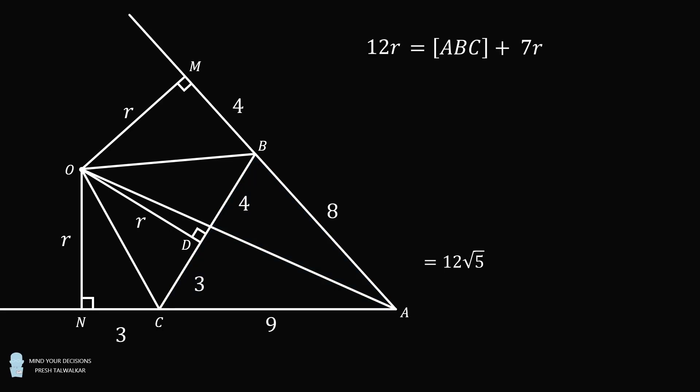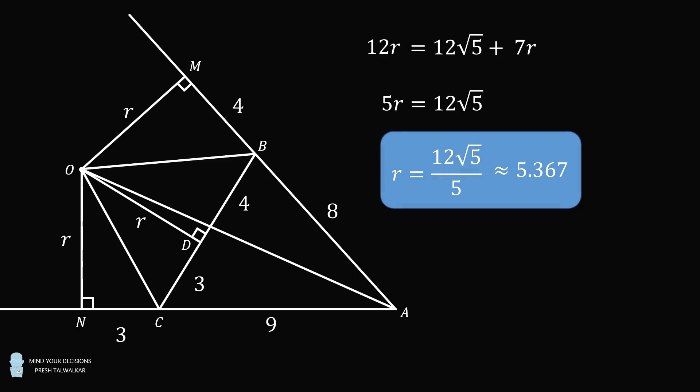So, we substitute that into the equation. Then, we subtract 7R from both sides to get 5R is equal to 12 times the square root of 5, which means R is equal to 12 times the square root of 5 all over 5, which is approximately equal to 5.367. And that's one way to solve this problem.